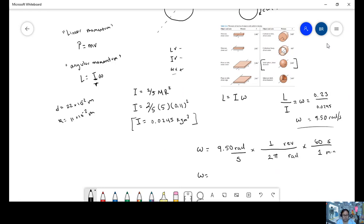Our result, we're going to divide over two pi, multiply times 60. And our answer is 90.75 revolutions per minute.